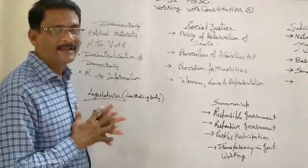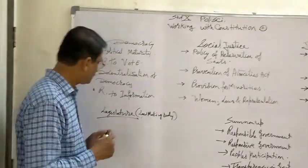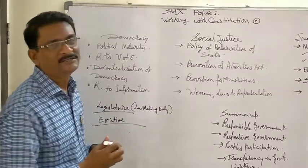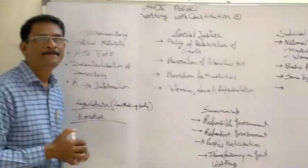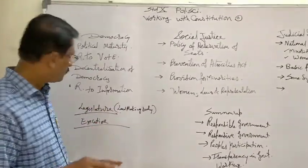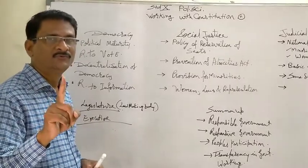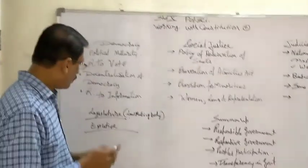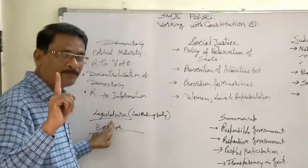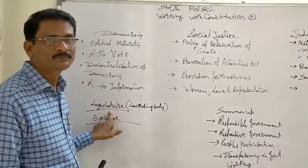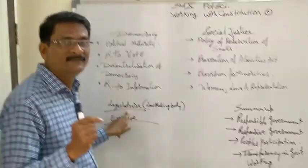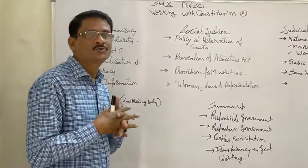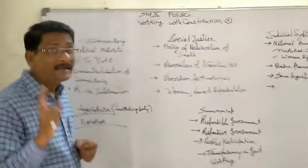When both the legislature and executive are working hand in hand, and if there comes a nexus between the two, the third option remains open — that is the judicial system. The Supreme Court of India is an autonomous body, not under the control of either the legislature or the executive. When law is being made, law made by the legislature can be revised by the Supreme Court.